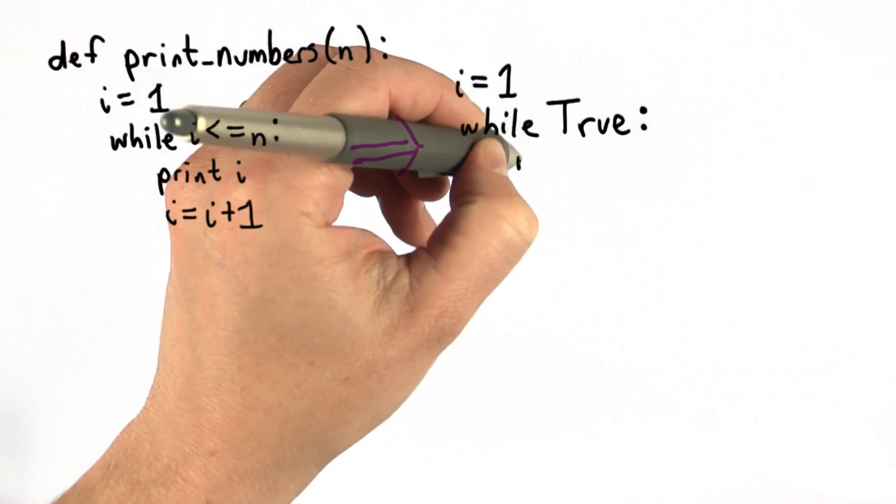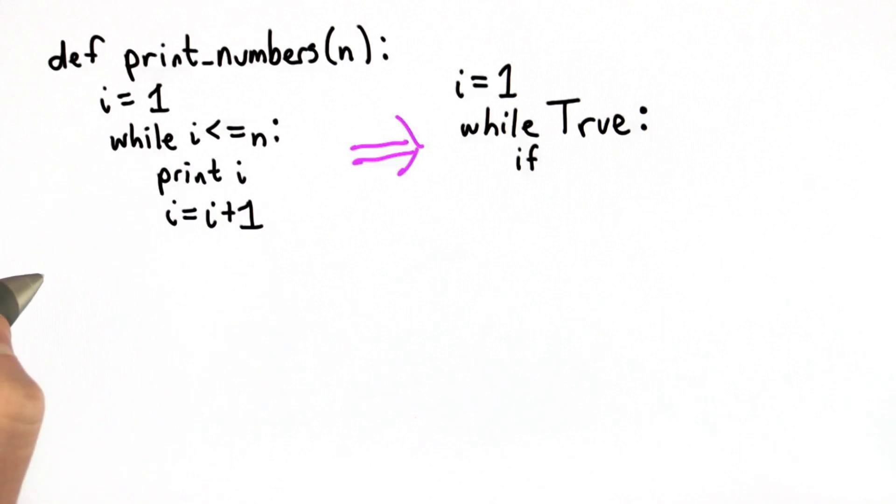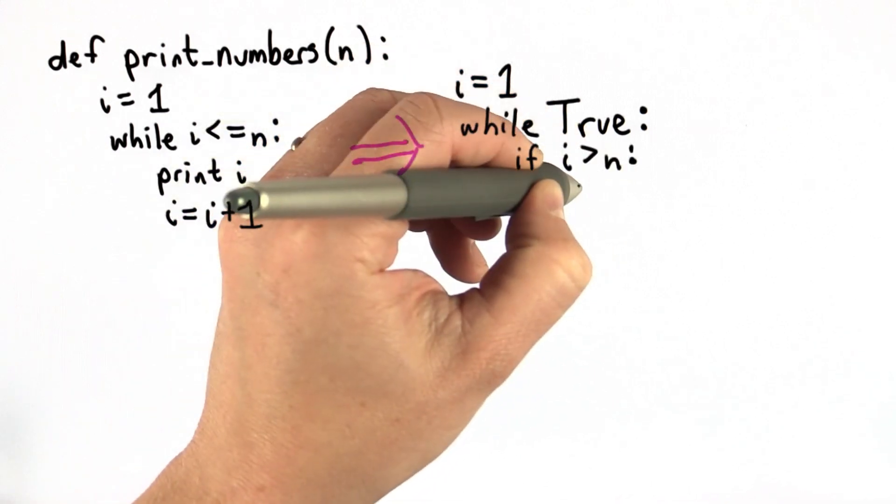We're going to have an if test that says, well, the stopping condition now is we're going to stop once i is greater than n. And the way to stop is to use break.